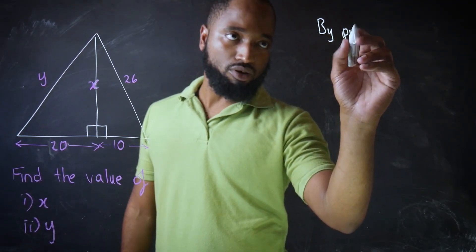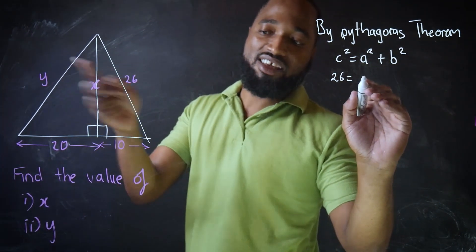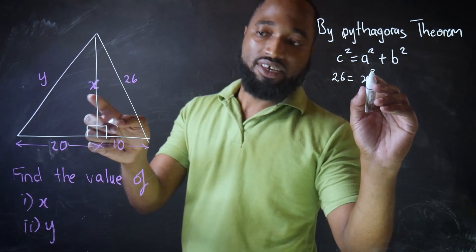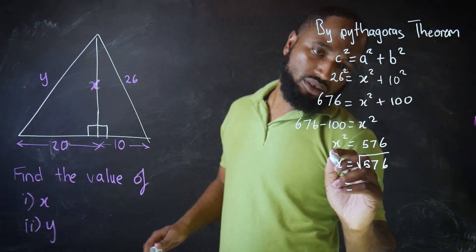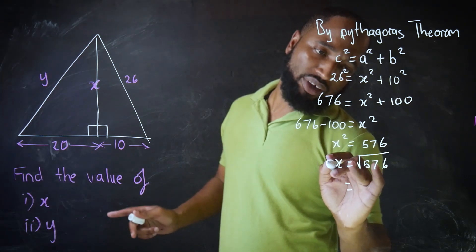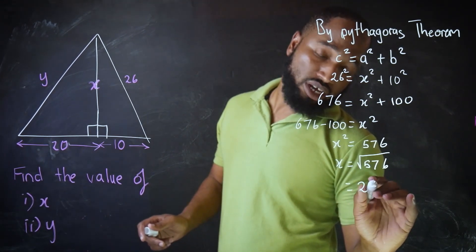By Pythagoras' theorem. In this case, C is 26. Let's make A to X. And B would be 10. And we have X. And we have X being the square root of 576, which turns out to be nice 24.